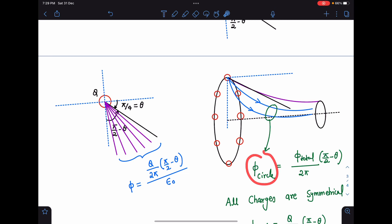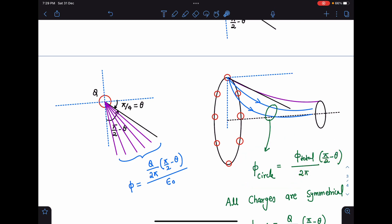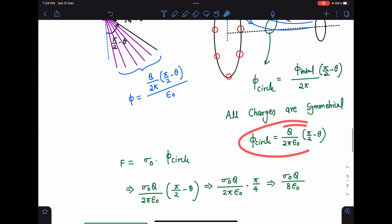Now it becomes very easy. I can write Φ circle, flux passing through this circle is total flux produced by this and its fraction of this angle. So how much will it be? (π/2 - θ)/2π which is the factor here. Now I can use F = σ₀ × Φ circle. So σ₀ q/2π ε₀ × (π/2 - θ). Here you can check σ₀ q/8ε₀. This is going to be the answer for this problem.